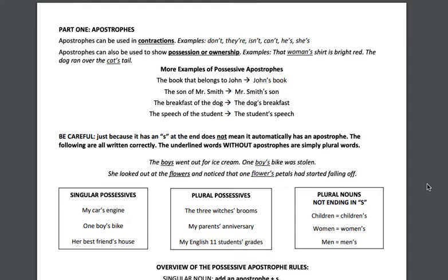Today we are going to talk about apostrophes, which are these little things here. We are also going to talk about its versus it's and whose versus who's. These are all things you will see on the ACT. Apostrophes can be used in contractions — that's just when we take two or more words and shorten them down. We see these all the time in informal writing. However, what we are really focusing on today is using apostrophes when we are showing possession or ownership.